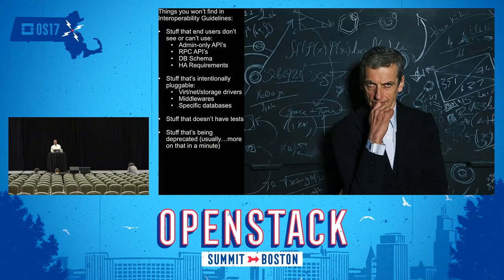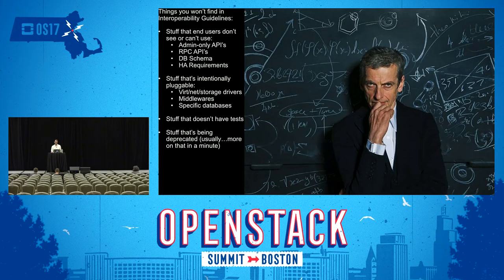When we talk about what's in the interoperability guidelines, we also have to talk about what's not in them. Some things you will never find are stuff that end users don't see or can't use — these are primarily focused on end users of clouds. So you're not going to see admin-only APIs, RPC APIs, database schema, or HA requirements. These are things that users can't see and don't consume directly.